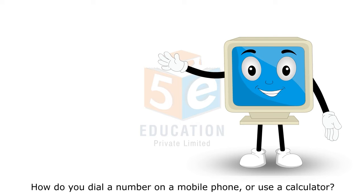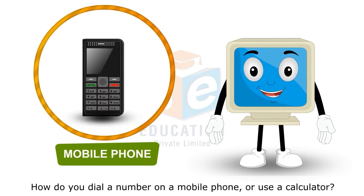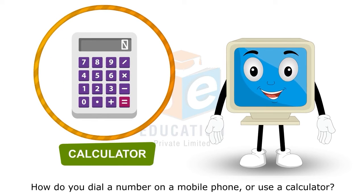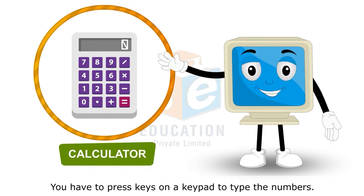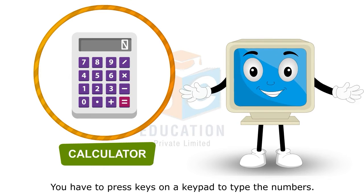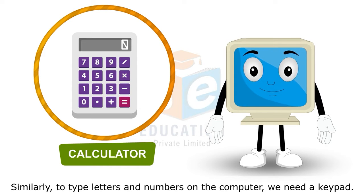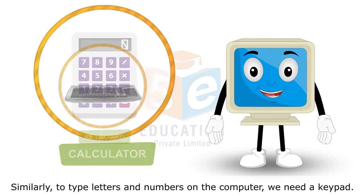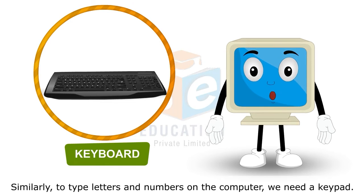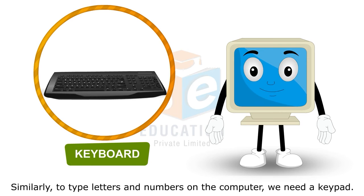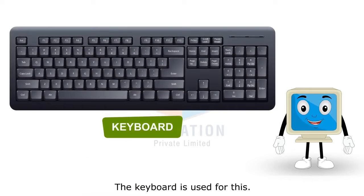How do you dial a number on a mobile phone or use a calculator? You have to press keys on a keypad to type the numbers. Similarly, to type letters and numbers on the computer, we need a keypad. The keyboard is used for this.